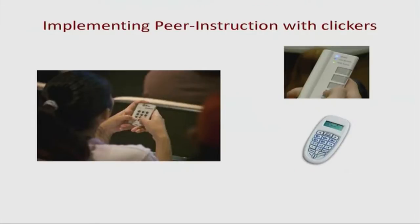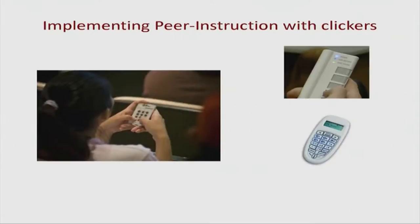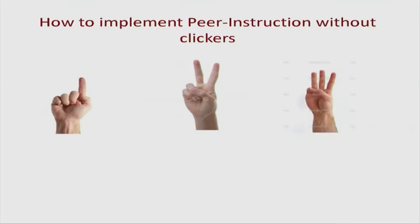How do you implement peer instruction? You all had clickers — that is one way for students to vote. However, clickers themselves are not peer instruction. The central part is the discussion: students talking to each other. Clickers are one implementation tool. What if you don't have clickers? You can do peer instruction with a very simple technology using your fingers — ask students to hold up their answer in front of you, not where others can see it. If their choice is one, they do this; if two, they do this — the teacher can see all students but students can't see each other.